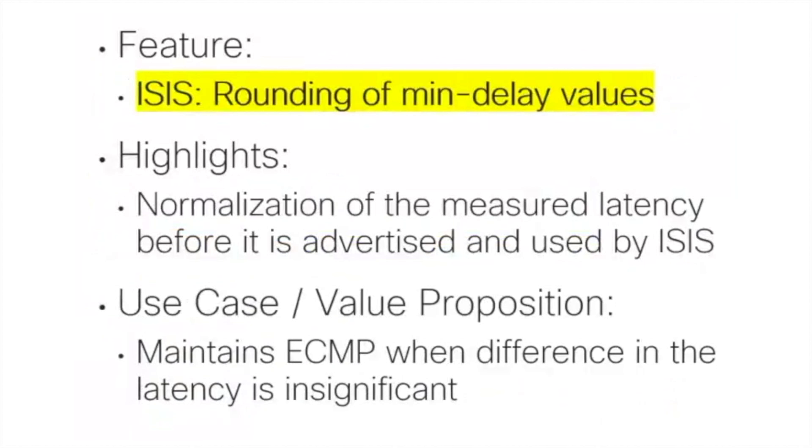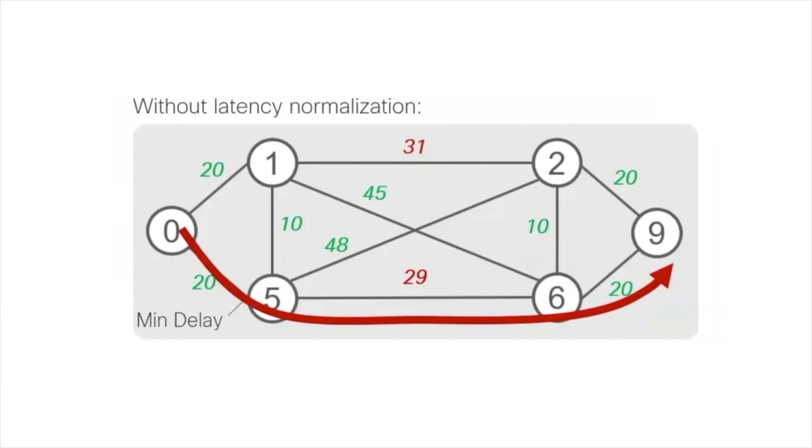Moving on to the second feature: rounding of mean delay values. For a few releases we have allowed routers in an MPLS network to measure delay on links and propagate that into the IGP as a link property. However, there are cases where paths are very close to each other from a delay perspective. For example, minimizing delay from node zero to nine via nodes five and six gives a cumulative delay of 20+29+20, but the top path differs by only two microseconds. We want to stay ECMP-aware and realize an end-to-end path minimizing delay that exposes other ECMP paths.